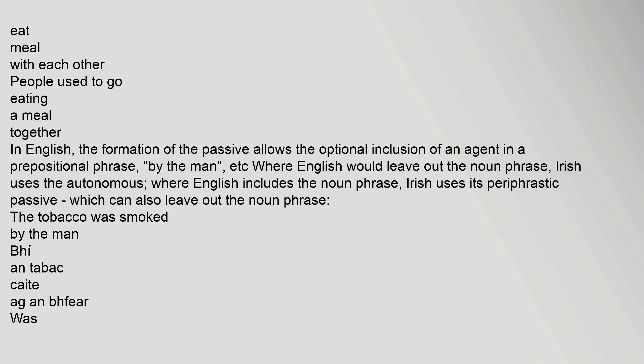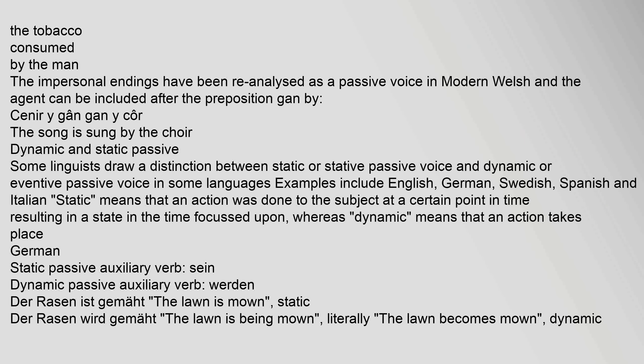The formation of the passive allows the optional inclusion of an agent in a prepositional phrase. Where English would leave out the noun phrase, Irish uses the autonomous; where English includes the noun phrase, Irish uses its periphrastic passive, which can also leave out the noun phrase. For example: "An tobac a caitheadh ag an bhfear" (The tobacco was smoked by the man). The impersonal endings have been re-analyzed as a passive voice in modern Welsh, and the agent can be included after the preposition "gan" (by), e.g., "Y gân a genir gan y côr" (The song is sung by the choir).